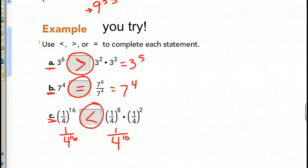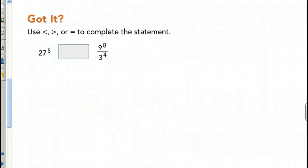Alright. You should have gotten greater than for A, equal to for B because 7 over 8 times 7, or divided by 7 to the 4th is 7 to the 4th. This one here is 1 over 4 to the 16th and this one is 1 over 4 to the 10th if you combine these two. Remember, if you have a larger number in your denominator of your fraction, that means your number is actually smaller. So, this is less than.